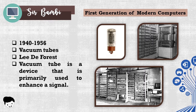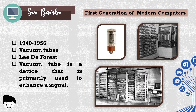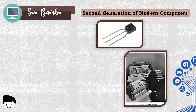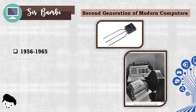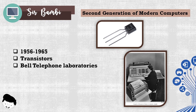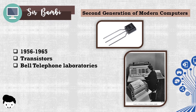The operating systems of computers of the first generation were large and sluggish. The second generation computers were devised during the period from 1956 to 1965. Transistors were used by second generation computers, which were developed by Bell Telephone Laboratories.